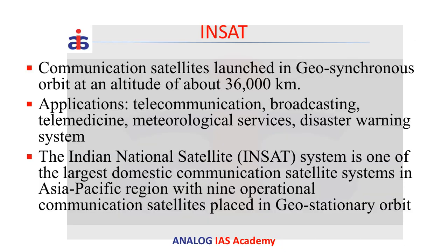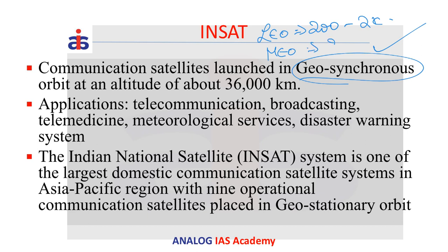In previous videos we saw that communication satellites are mostly placed in geosynchronous orbit. A quick recap: there are three kinds of orbits — low earth orbit from 200 to 2,000 kilometers, middle earth orbit from 2,000 to 35,786 kilometers, and when a satellite is placed at 35,786 km it is called a geosynchronous orbit, taking exactly the same time as one Earth day.